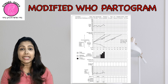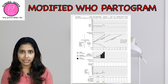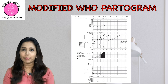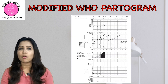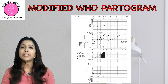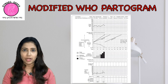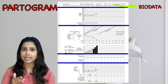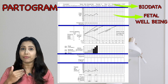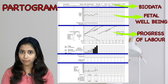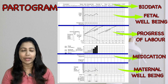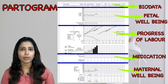A partogram is basically a graphical representation that denotes all the events of labour on a single piece of paper. In the modified WHO partogram, we can divide it into five parts: first is the maternal bio data, followed by characteristics related to fetal well-being, the progress of labour, medications, and maternal well-being.